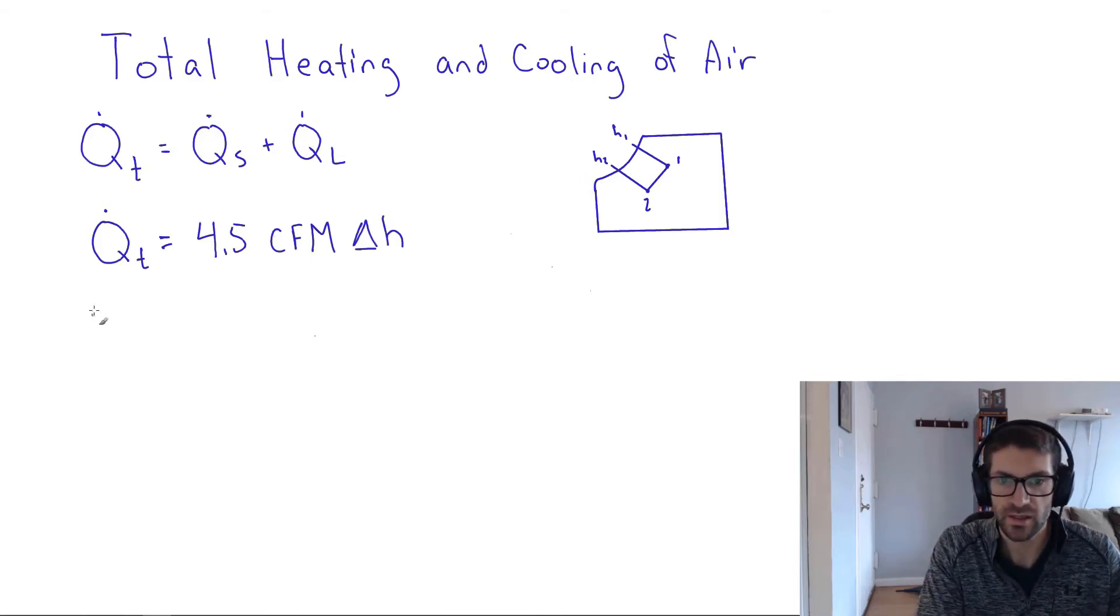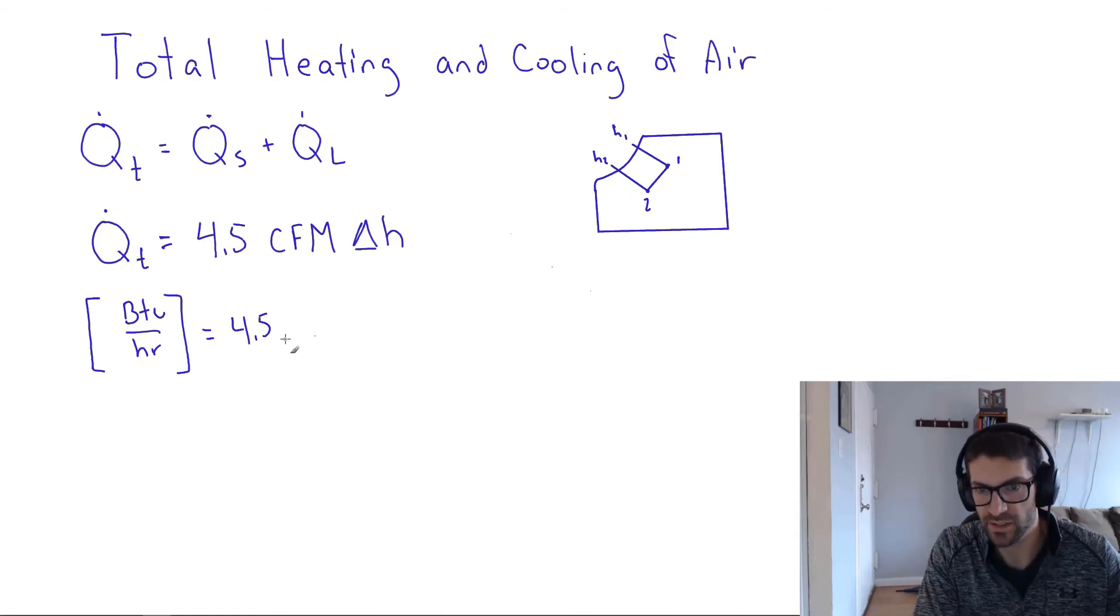So for the units, the total heating or cooling that's being done is always going to come out in BTUs per hour. And the constant is 4.5. Just like the other rules of thumb, this is based on a density or a specific volume that corresponds to common temperatures in the middle of the psychrometric chart. If you have extremely cold or extremely hot temperatures, then this constant might change a bit, and then you might not want to use the rule of thumb. You may want to go back to a more fundamental equation in that case.